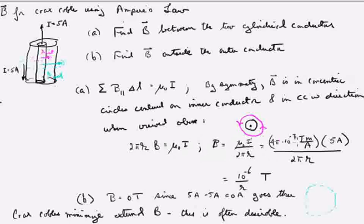Mu naught is 4 pi times 10 to the minus 7, and so the magnetic field is going to be in the direction shown in a magnitude 10 to the minus 6 divided by the radius. And the radius, and the radius then would be between the inner and the outer.